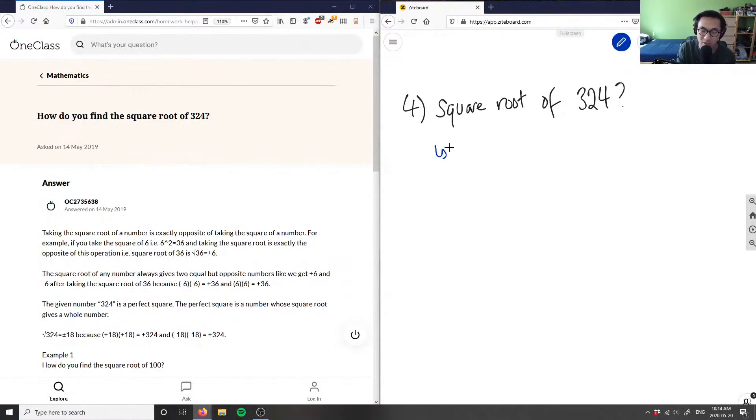So I'm going to use the prime factor method. I'm pretty sure I've answered this question before, but we can go through it. So I want the prime factors of 324.